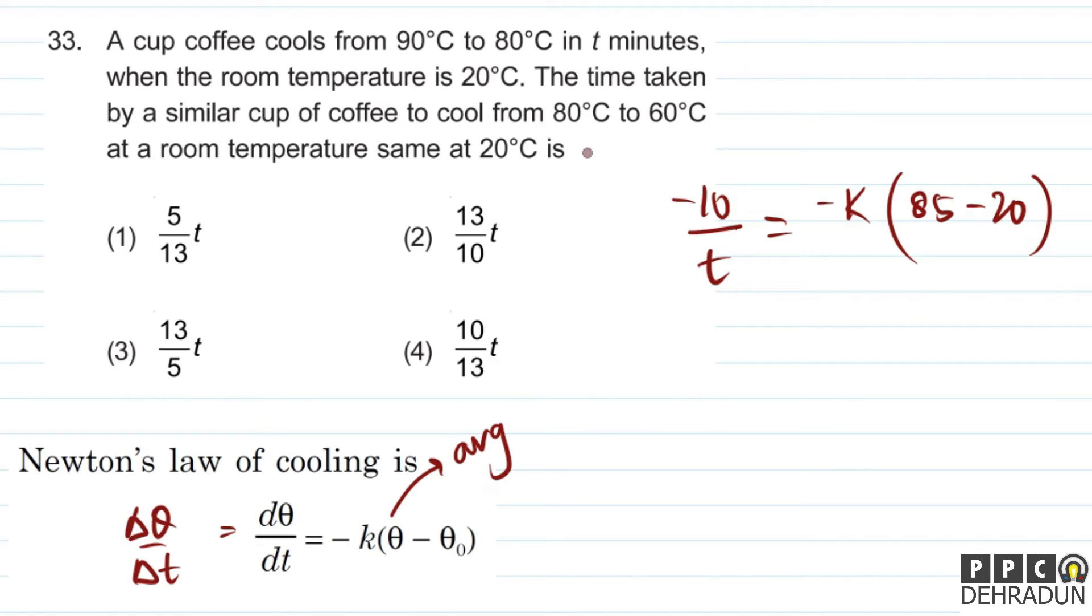In the same way, for the second equation, this time it goes from 80 to 60, so the change in temperature will be minus 20. Upon the time taken, which we need to find. Let me call this t₀.